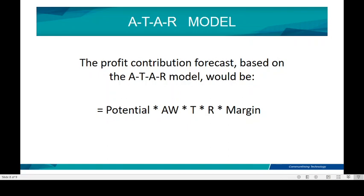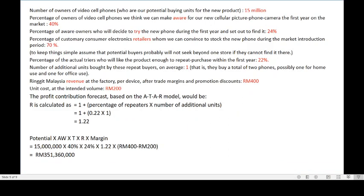The next tool to evaluate your concept is the ATAR model, used to determine how much profit you can get from the concept. The profit contribution forecast is calculated as: Potential × Awareness × Trying × Retailers × Margin. For example, using the concept of video cell phones, you need to know the number of owners of video cell phones — your potential buying units. You can forecast 15 million owners who can buy your potential product.